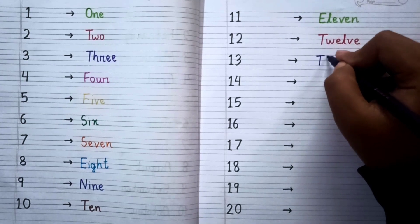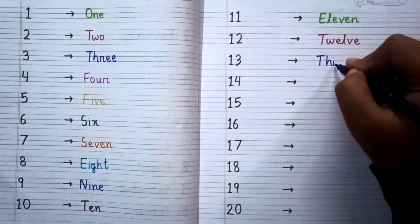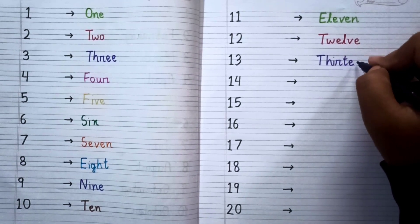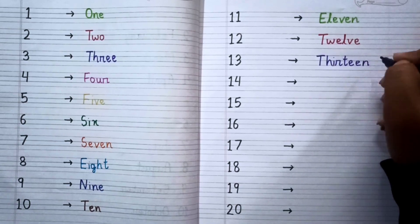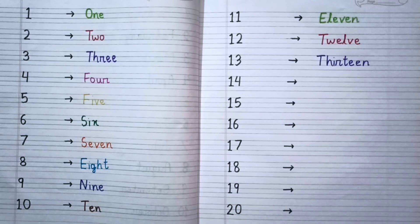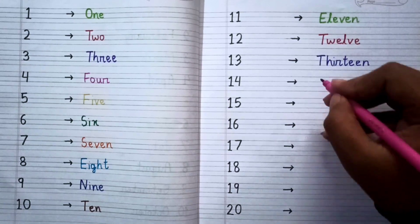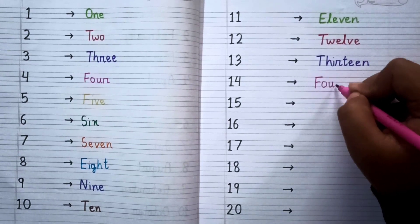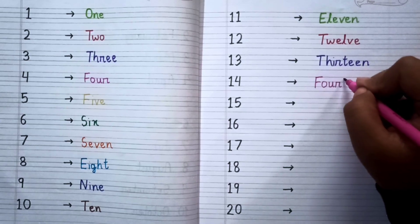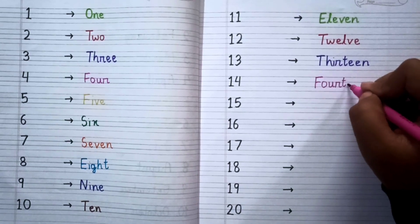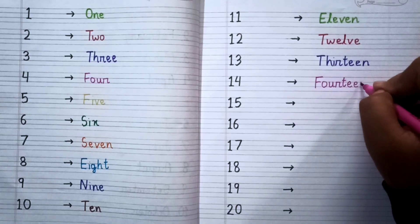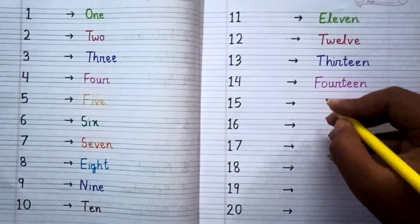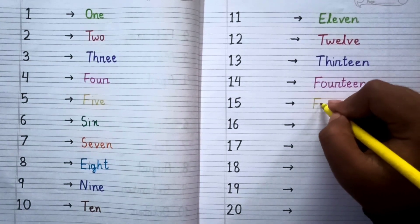After twelve the next number is thirteen and the spelling of thirteen is T-H-I-R-T-E-E-N, thirteen.